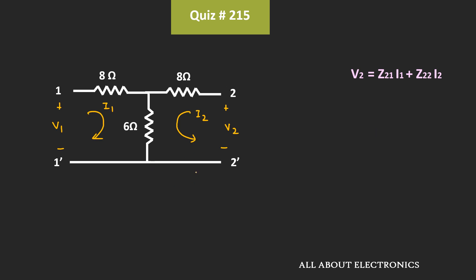Similarly, now let's apply the KVL equation in the second loop. So applying the KVL equation, we can write voltage V2 is equal to 8 ohm times I2, that is the drop across this 8 ohm resistor, plus 6 ohm times (I1 plus I2). That means voltage V2 is equal to 6 times I1 plus 14 times I2. And if we compare this expression with the standard Z parameter expression, then we can say that here Z21 is equal to 6 ohm while Z22 is equal to 14 ohm.